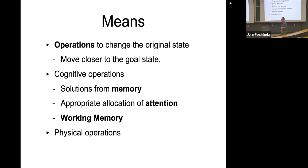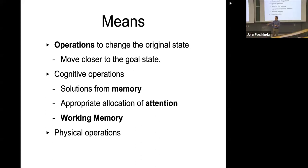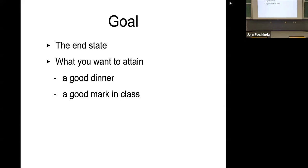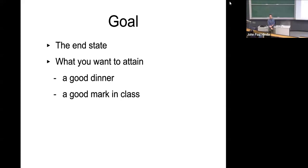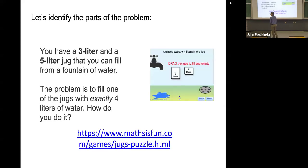The goal state is what you want to attain — a good dinner, a dry route to your building, or a good grade in this class. At the start of the course you had no grades; your goal might be an 85. You don't know exactly how to get there at first, but you know possible means: studying, reading ahead, attending class. That's the problem of how to excel in this course.